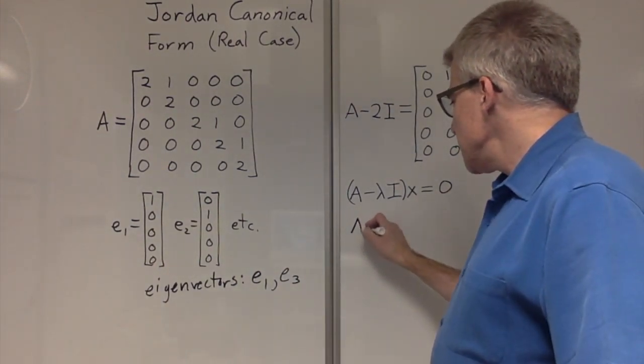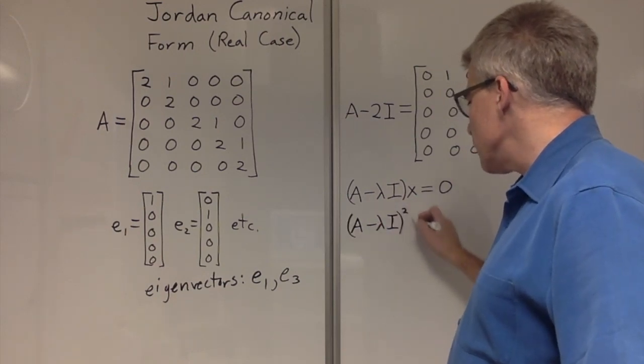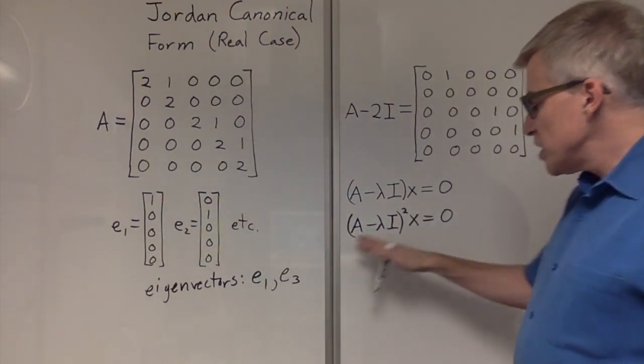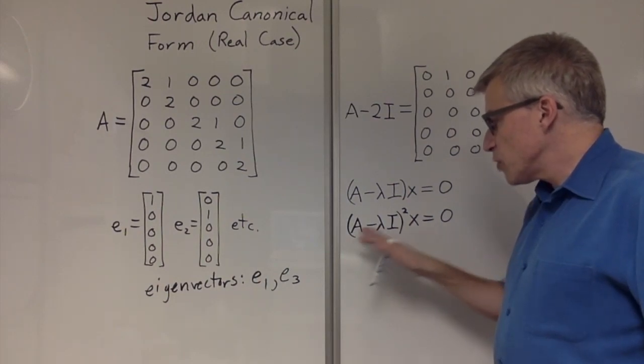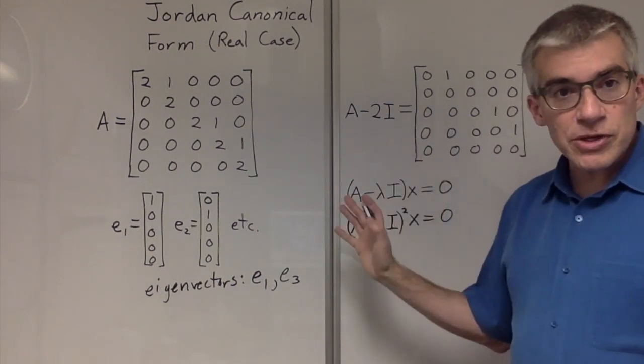The idea that someone came up with is to use a higher power of that. What this is saying is if you perform A minus lambda I, meaning this matrix, multiply a certain vector,